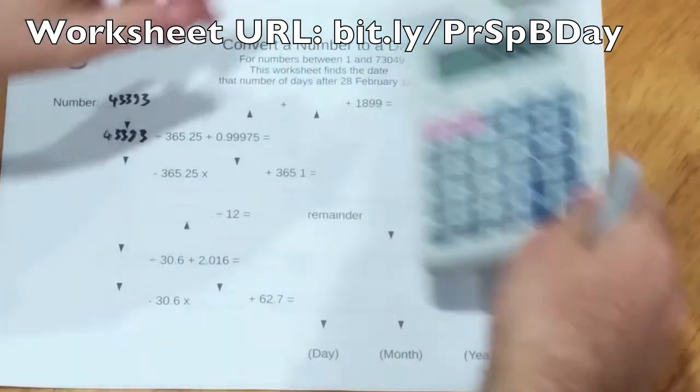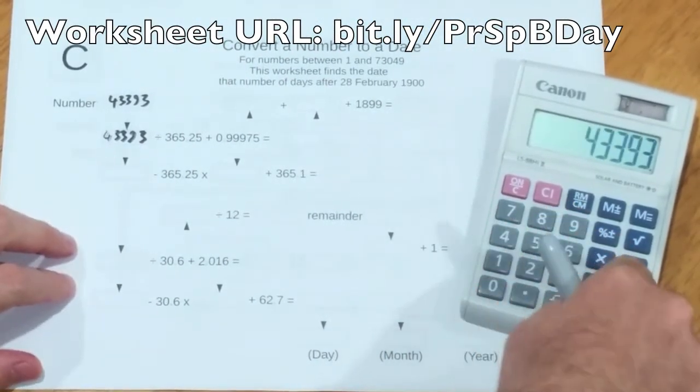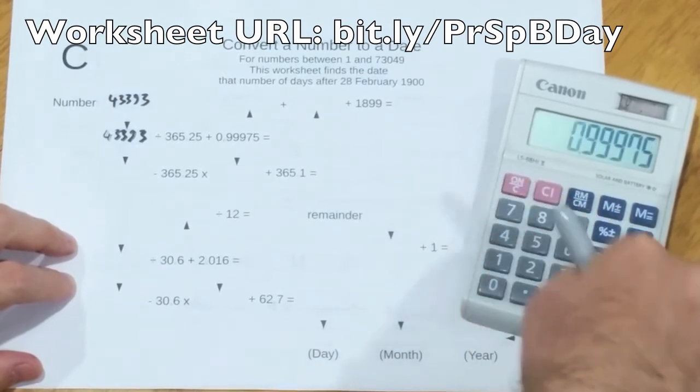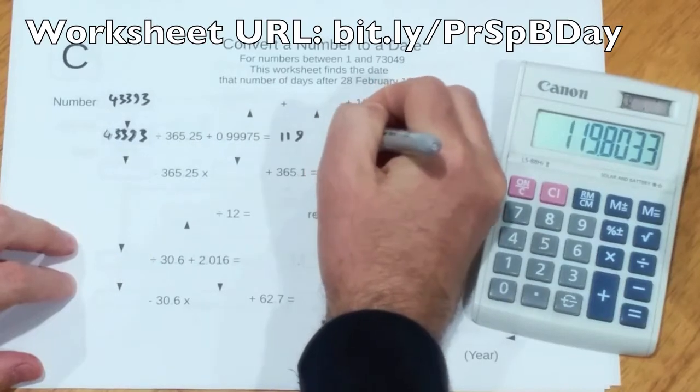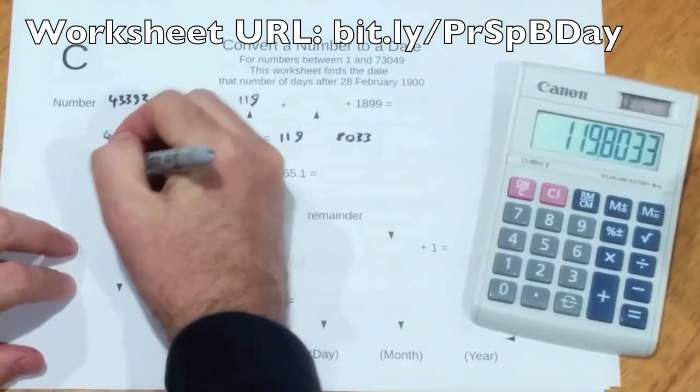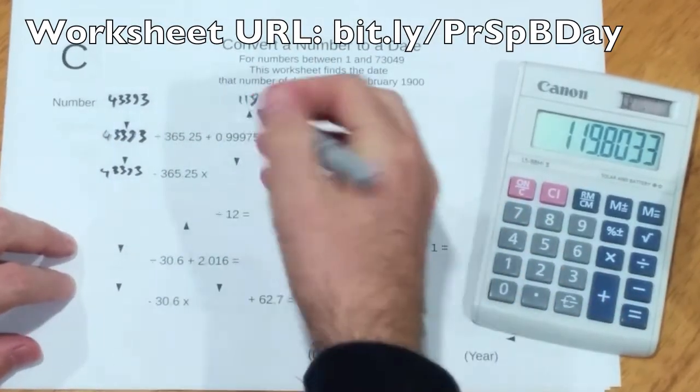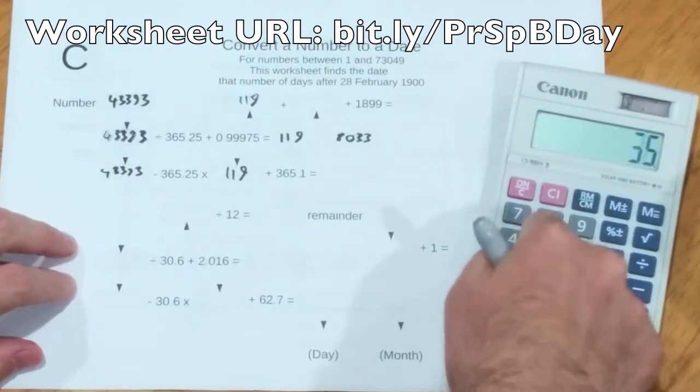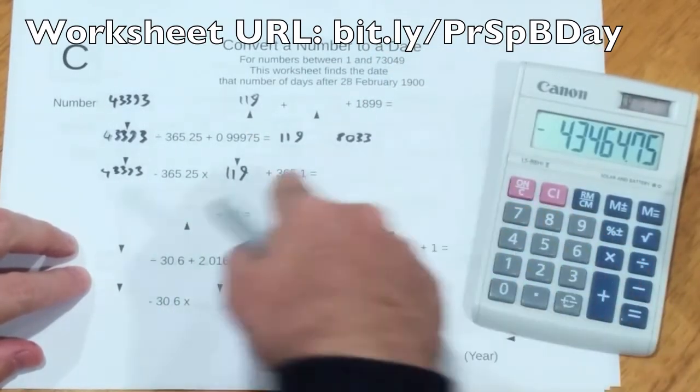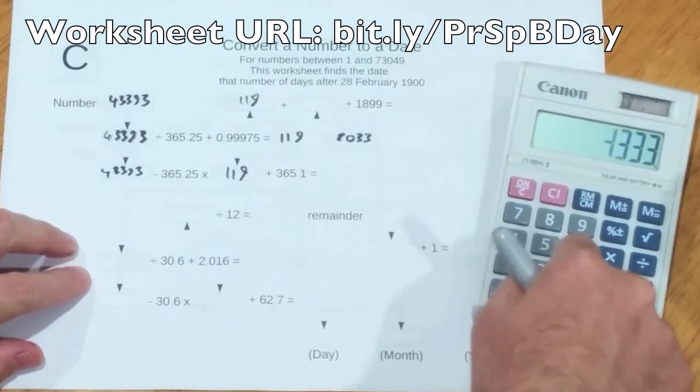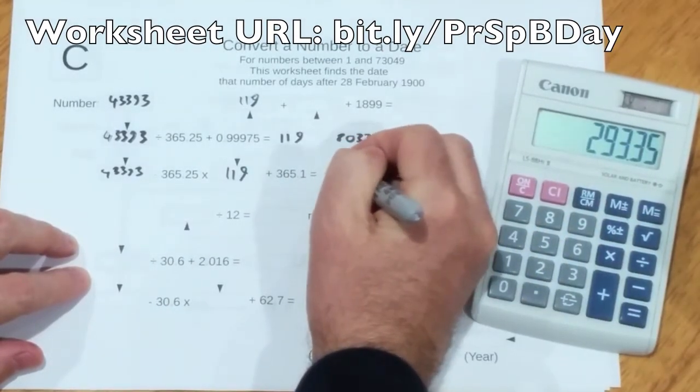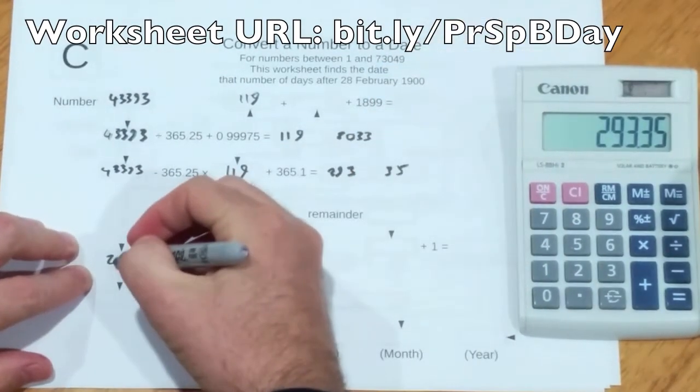Do the calculations. Again, there's some ones that need calculators. So I'll just do this quickly. 119.8033. 119.